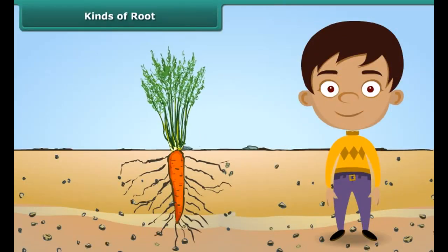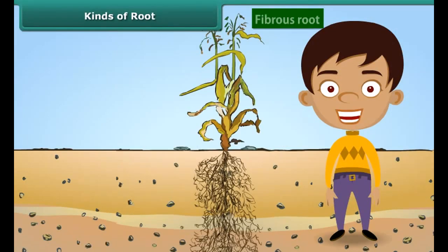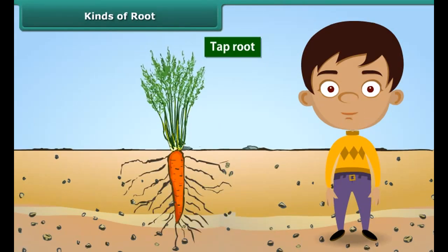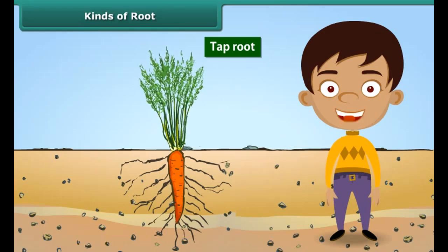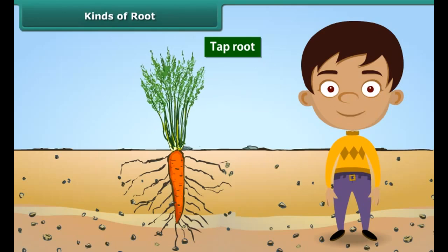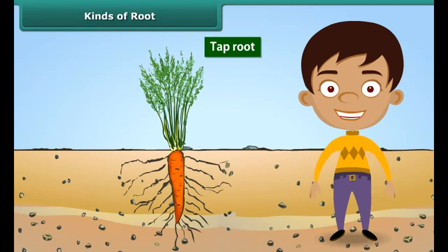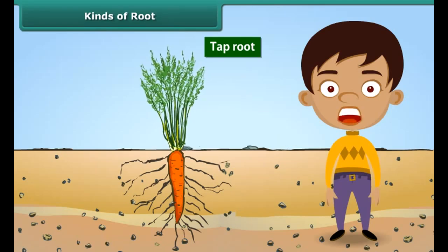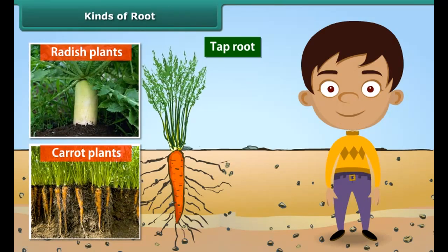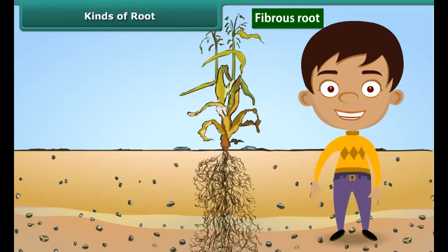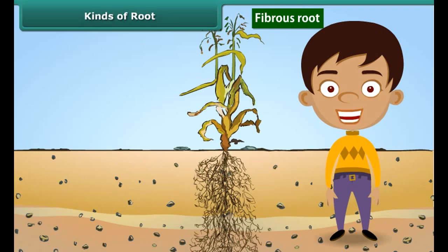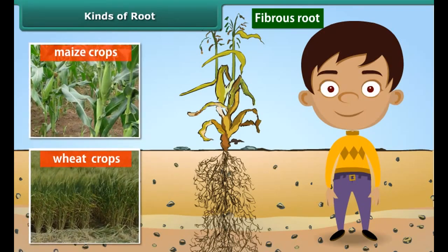Roots are of two types: tap roots and fibrous roots. A tap root is a single large root that grows straight down deep into the soil. A few small roots that branch from it are called lateral roots — for example, roots found in radish and carrot plants. Fibrous roots, on the other hand, are a cluster of fine roots that spread into the soil — for example, roots found in maize and wheat crops. A fibrous root has no main root.